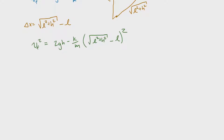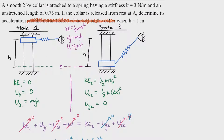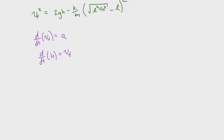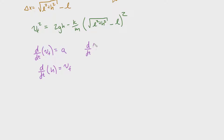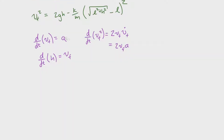To find acceleration from this equation, we recognize that the time derivative of velocity is acceleration. Also, the time derivative of h equals the final velocity of the collar, because the collar's position is tracked by vertical distance h, so any change in h corresponds to how fast the collar moves. We denote this as h-dot equals v_f. For the left side, the time derivative of v_f squared requires the chain rule, giving 2v_f times v_f-dot, which equals 2 times v_f times acceleration.